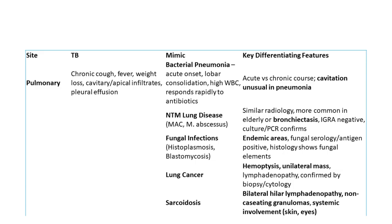Among pulmonary TB mimics presenting with fever, cough, weight loss, and pleural effusions: bacterial pneumonia is common; NTM lung disease — Mycobacterium avium and Mycobacterium abscessus — is more common in patients with underlying immunodeficiency like cystic fibrosis or HIV. Histoplasmosis is more common in the Americas but watch for it in India. Lung cancer is more common in the elderly; think of it when there is hemoptysis. Sarcoidosis requires systemic involvement to be present.